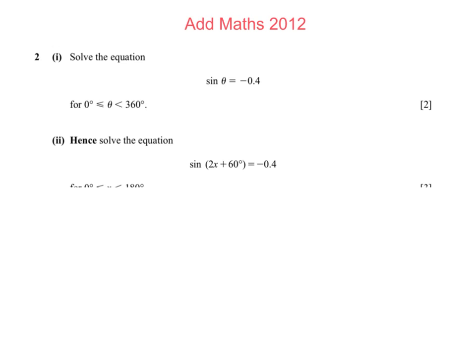I'm asked 2012 paper 1 question 2. So we have sine theta equals minus 0.4. Our first answer we're going to get from our calculator, which is the inverse sine of minus 0.4. And that gives us an angle of minus 23.58.